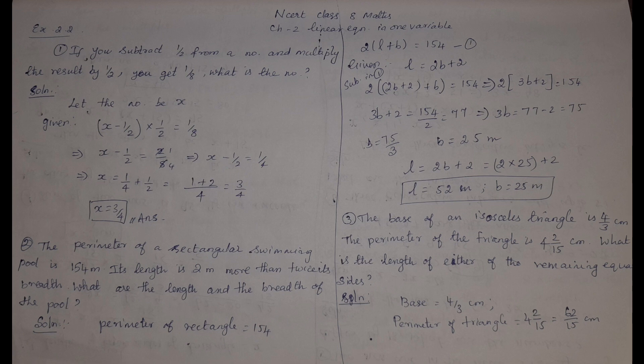Let the number be x. So, given: (x minus 1/2) multiplied by 1/2 equals 1/8. Solving this equation, x equals 1/4 plus 1/2. Taking LCM we get the answer x equal to 3/4.